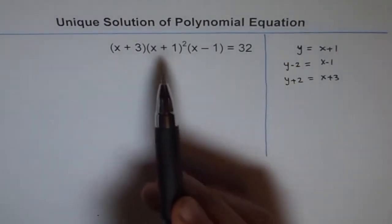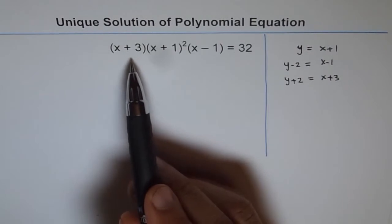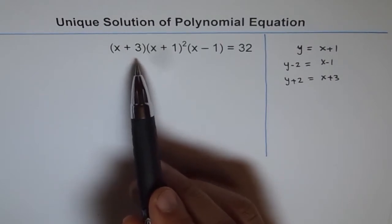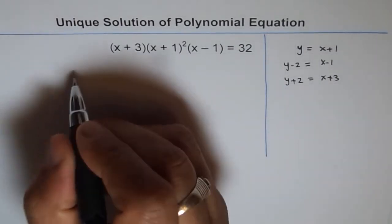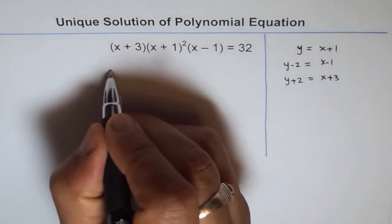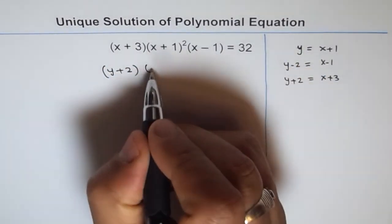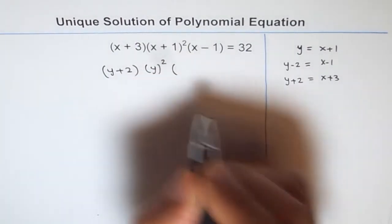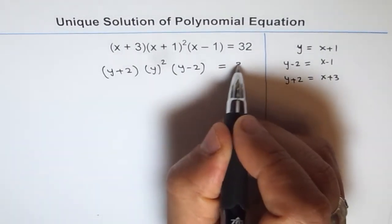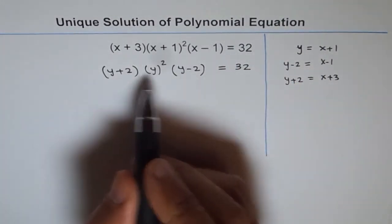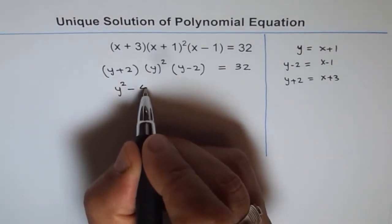Now we substitute y for x plus 1, y minus 2 for x minus 1, and y plus 2 for x plus 3. In that case this equation becomes (y plus 2) times y squared times (y minus 2) equals 32. And y plus 2 times y minus 2 is y squared minus 4.